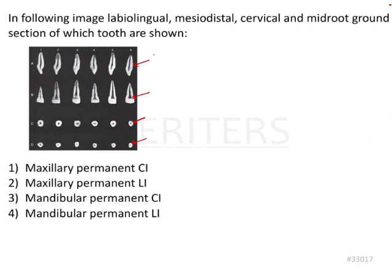From here we can try to identify the tooth. If you see the mesial or distal view — that is your first figure — a wedge-shaped crown is seen. A wedge-shaped or triangular crown is generally seen. Then coming to the labial or lingual view, that is the mesodistal view, the outline is quite clear and the tooth appears to be shovel-shaped.